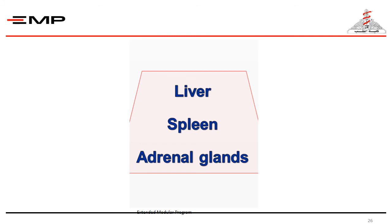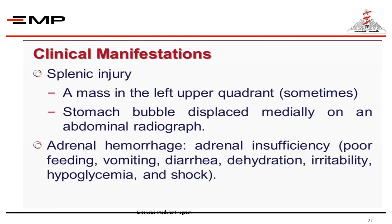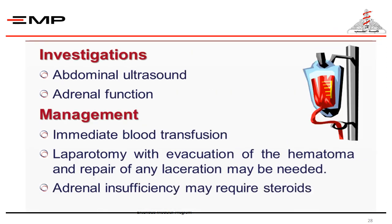Lastly, intra-abdominal injuries involving the liver, spleen, and adrenal glands. Clinical manifestations include a mass in the left upper quadrant in splenic injury. Adrenal hemorrhage and adrenal insufficiency present with feeding difficulties, vomiting, diarrhea, dehydration, irritability, hypoglycemia, and shock — this occurs with bilateral adrenal hemorrhage. Investigations include abdominal ultrasound, adrenal function tests, CT scan, and MRI. Management includes immediate blood transfusion, evacuation of the hematoma, repair of lacerations, and steroid replacement for adrenal insufficiency.